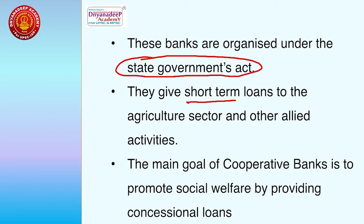Cooperative banks give short-term loans — very importantly — to the agriculture sector and other allied activities. They also give medium-term and long-term loans. The main goal of cooperative banks is to promote social welfare by providing concessional loans; the interest rates charged by cooperative banks are very low.